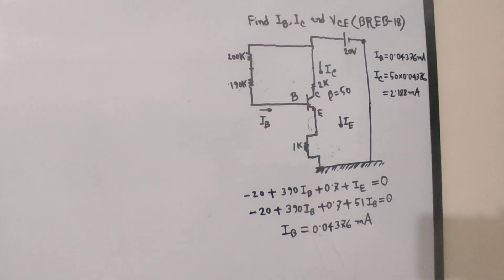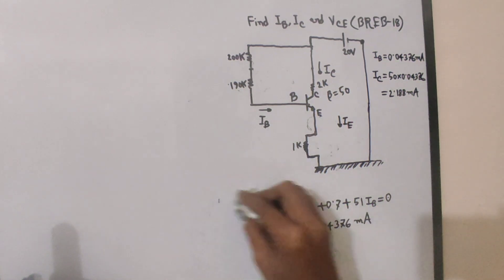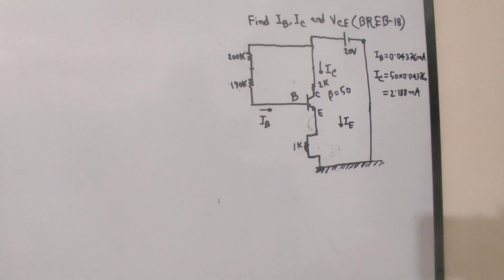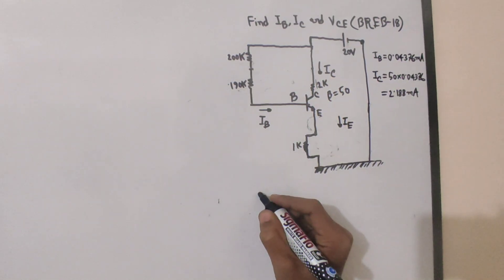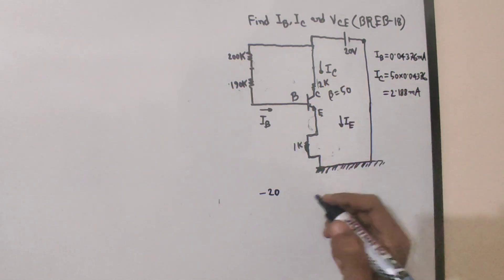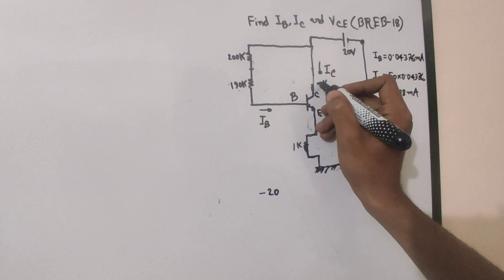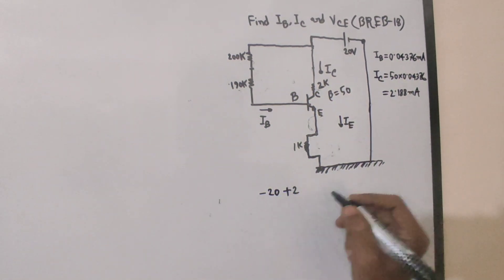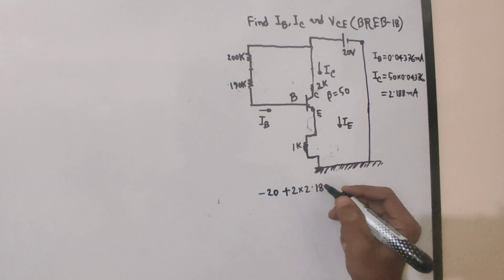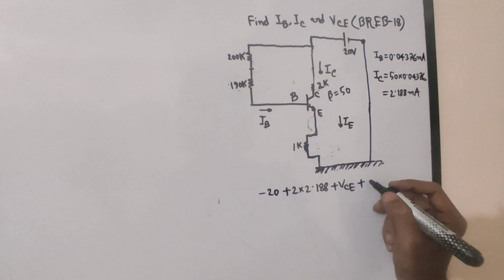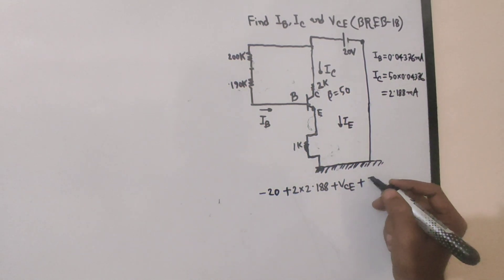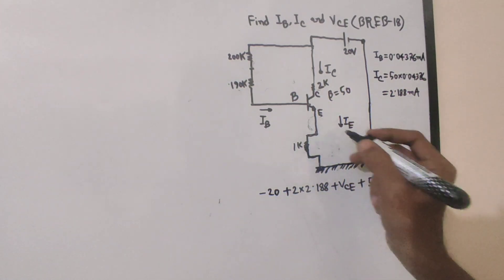Now for verification, we find VBC. Applying the loop: minus 20 plus 2k terms — 2k plus 2 × iC, with iC = 2.188 milliamps — plus VBC, plus (β+1) × iB, where β+1 = 51, gives us the verification for active mode.